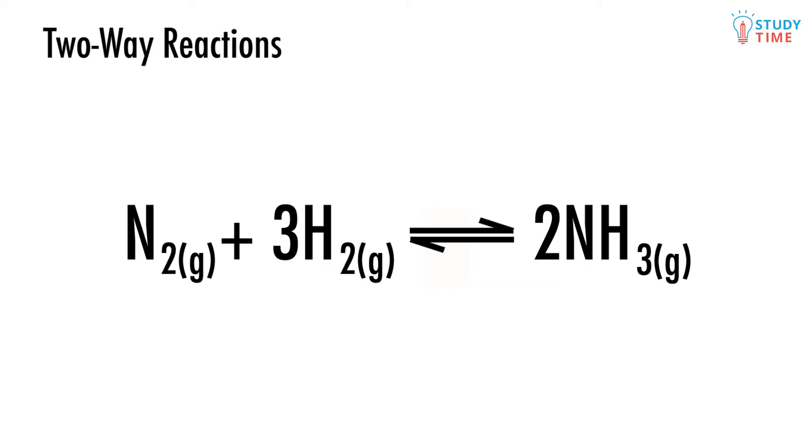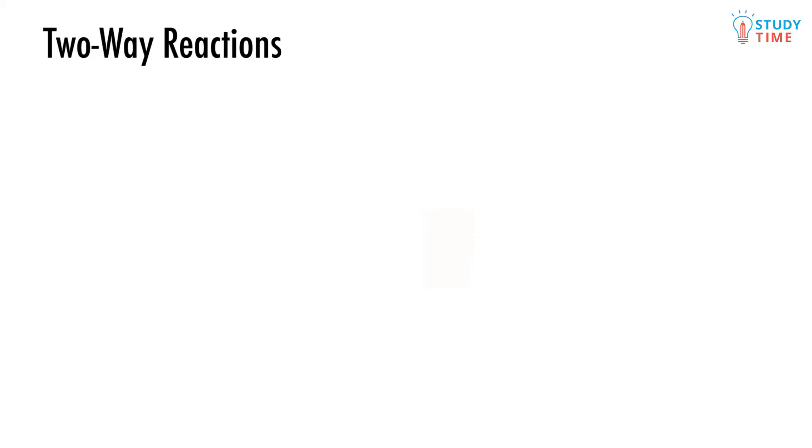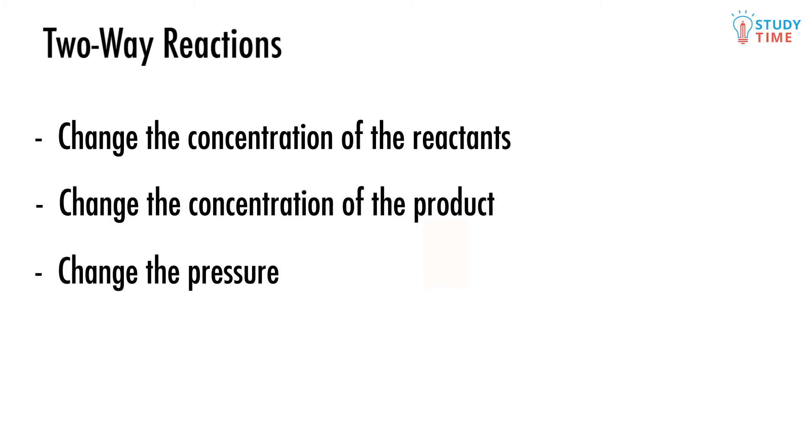But what if we wanted to suddenly increase the amount of ammonia and not have it turning back as quickly? There's actually a bunch of different things we can do that's going to change this equilibrium. We could change the concentration of the reactants, change the concentration of the products, change the pressure, or change the temperature. What is doing each of these things going to mean for our precious equilibrium that we worked so hard to obtain?